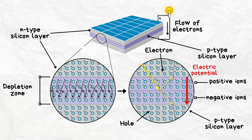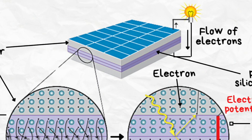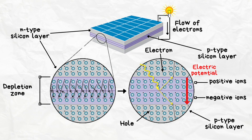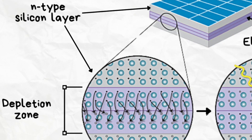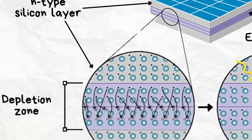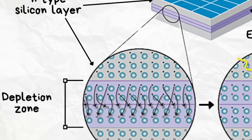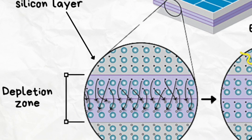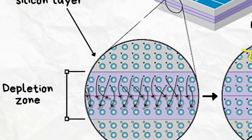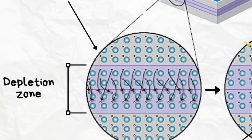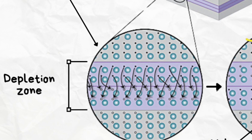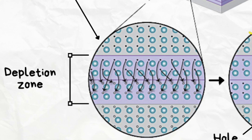In a solar cell, there are two layers of silicon: an N-type silicon layer that has extra electrons, and a P-type silicon layer that has extra vacancies known as holes. Where both layers meet, it is called a P-N junction. At the junction, some electrons will migrate from the N-type layer to fill the holes in the P-type layer, creating a depletion zone.